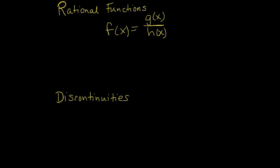So notice, I've given you a rational function, f of x. And the reason that this is a rational function is because it is written as a fraction. The only thing I have to make a note of here is that g of x and h of x are both polynomial functions.